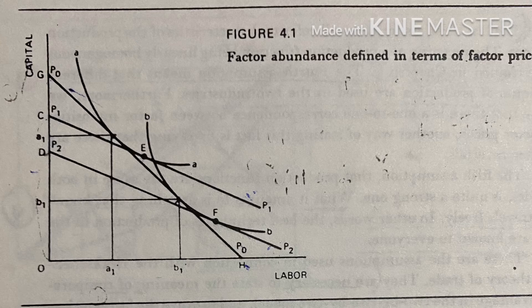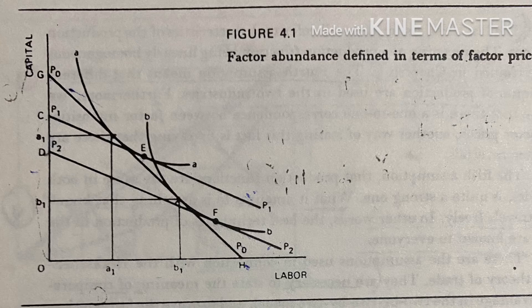This means that the slope of the line representing the ratio of factor prices in country two will be less steep than the slope of p0 p0. A possible factor price line in country two is p1 p1, which is tangent to the AA isoquant at E. A parallel factor price line p2 p2 is tangent to the BB isoquant at F. It is obvious that p2 p2 must lie below the p1 p1 factor price line. From this it follows that the cost of producing one unit of good A in country two is OC measured in capital, whereas it is OD measured in capital for one unit of good B.